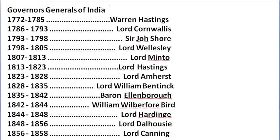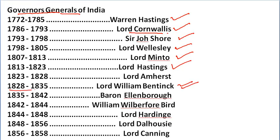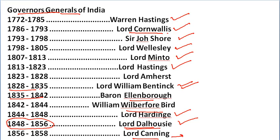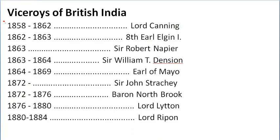Now, here is the list of Governor Generals — earlier they were called Governor Generals by the British. The first Governor General was Lord Hastings from 1772 to 1785, then Lord Cornwallis — a very successful Governor General — then Sir John Shore, Lord Wellesley, Lord Minto, Lord Hastings, Lord William Bentinck from 1828 to 1835, Baron Ellenborough from 1835 to 1842, William Wilberforce, Lord Hardinge, and Lord Dalhousie. Lord Dalhousie was very strict, and his policies were somewhere responsible for India's first freedom struggle. Then we have Lord Canning, who became the first Viceroy of India. Lord Canning served from 1858 to 1862.